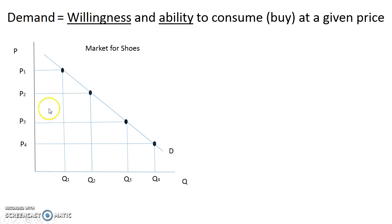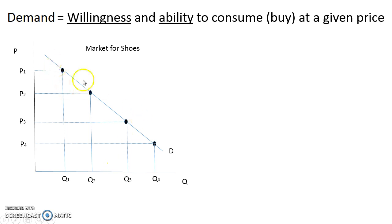What we see here is this relationship: as price is going down, the quantity is going up. The demand curve, as we said, is downward sloping.